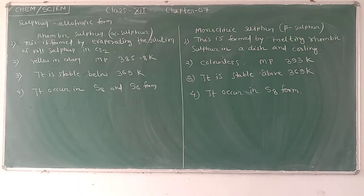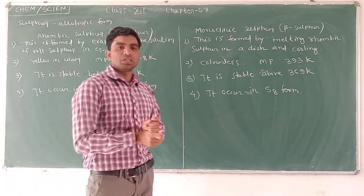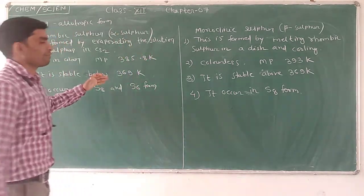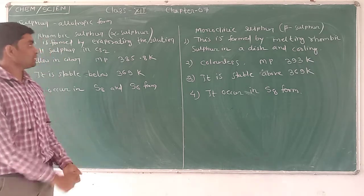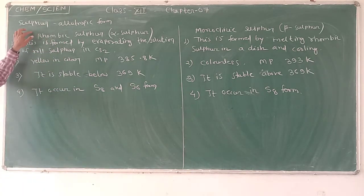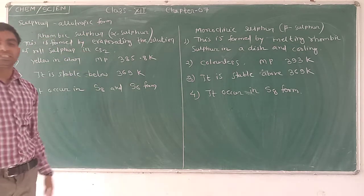Hello good morning everyone. So now continuing with Class 12 Chapter 7. Today's topic is Sulphur. We are talking about Oxygen Group 16 and next is Sulphur. Sulphur has two allotropic forms.